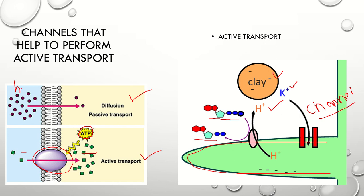Where molecules are at high concentration, no energy is required — they transfer from high concentration to low concentration, but the speed is very slow. This is the diffusion process. So water and small particles move with diffusion, but ions and bigger structures move with active transport. Active transport moves from low to high concentration, while diffusion moves from high to low. You must understand the difference between passive transport and active transport.